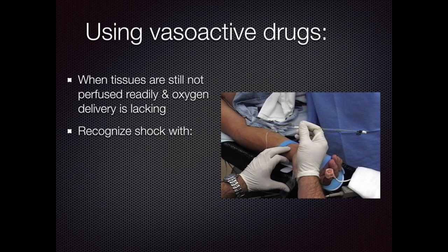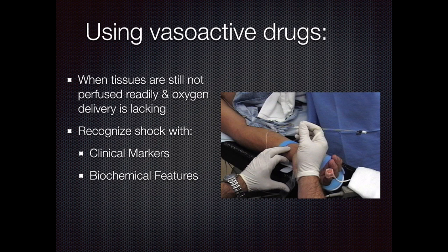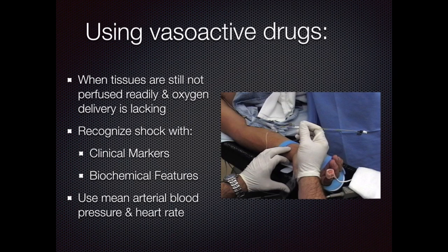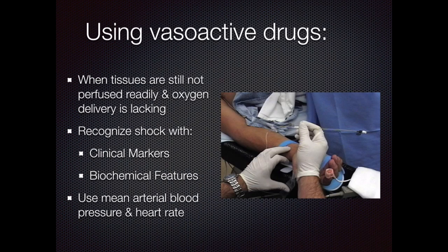There are several signs that indicate shock. Some clinical markers are cool peripheries, delayed capillary refill time, skin mottling, altered mental state, and low urine output. Biochemical features are metabolic acidosis, elevated plasma lactate levels, and renal dysfunction. You can also use other indicators to look for signs that tissue perfusion is lacking, such as mean arterial blood pressure and heart rate.